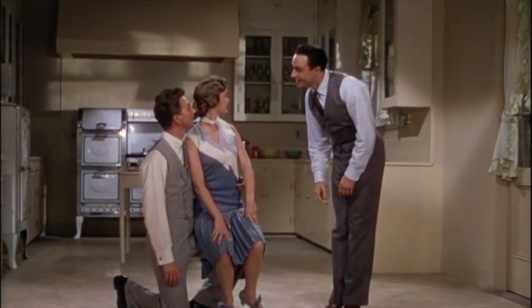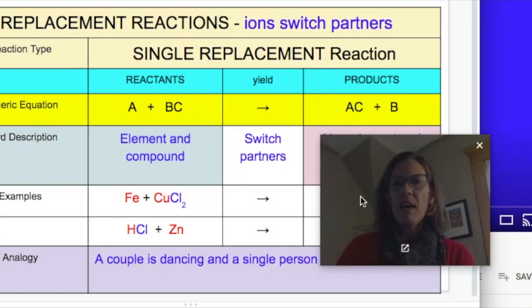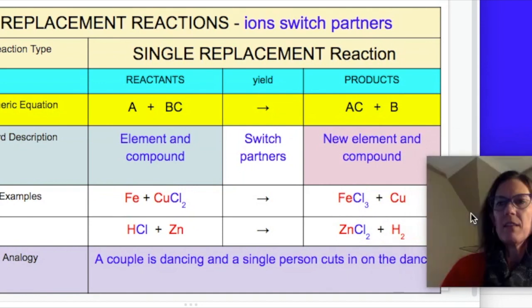Here we have an example that you'll see in the video, Fe plus CuCl2, Fe and Cu switching places, and you'll see that Cu, which is copper, like a penny, will be produced. Here you can't see the copper because it's not in its element form, but here you do.